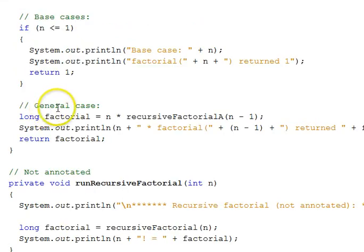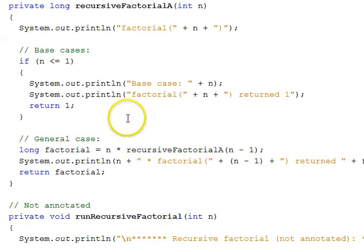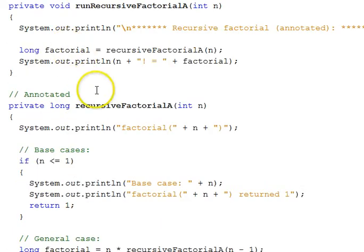Here's the general case right here. We have factorial long, and it's equal to N times, and then the name of the function itself, recursive factorial A, self-calling, but with a reduced problem set. Now instead of N, what was passed in here, it's N minus 1. And each function, as it's called, will annotate itself. And when we get the answer back from all these recursive calls, when they finally unwind and come back here, we'll return the answer to our caller up here, and it will be printed out.